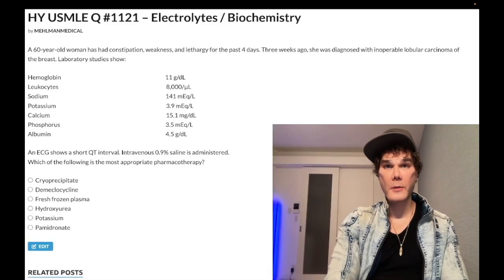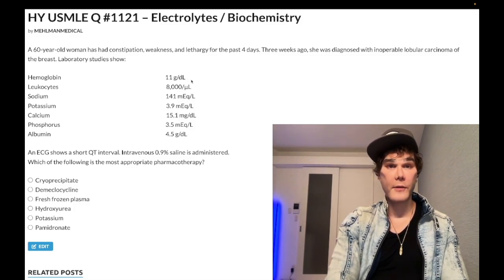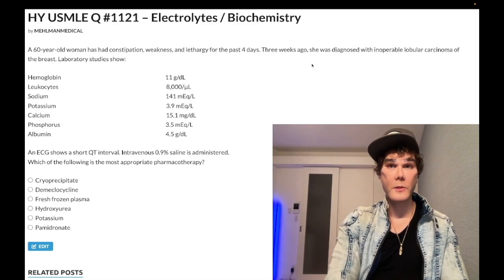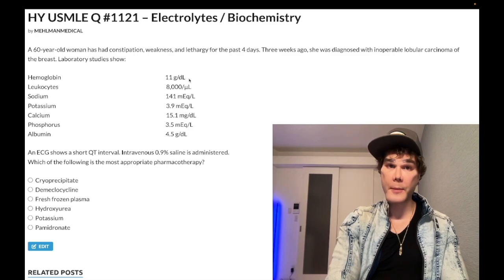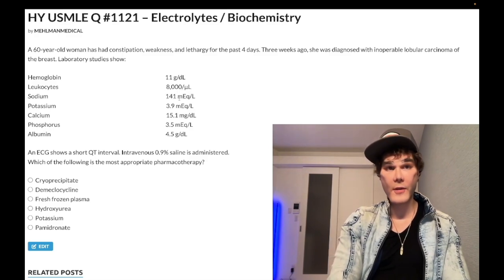Medium biochemistry electrolytes question for Steps 1 and 2. A 66-year-old woman presents with constipation, weakness, and either gas or pain for four days. Three weeks ago she was diagnosed with inoperable lobular carcinoma of the breast. Lab studies show low hemoglobin of 11 grams — normal is 13 to 17.5 for non-menstruating women. This is likely anemia of chronic disease given the breast cancer. Leukocytes are normal at 8,000.